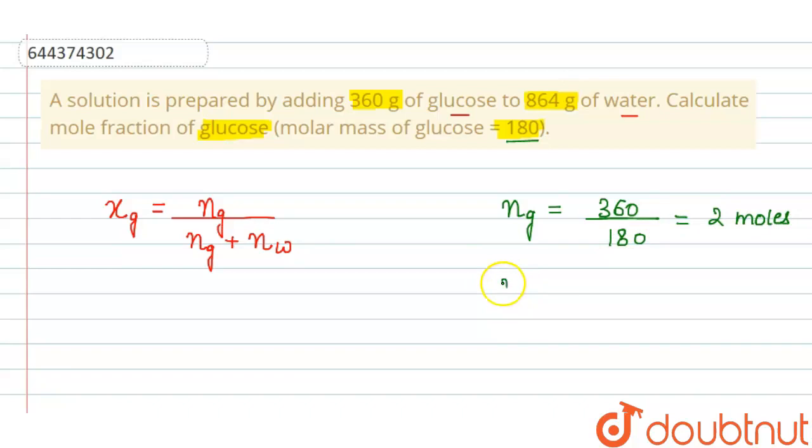Now if we calculate the number of moles of water, the mass of water which is 864 grams divided by the molar mass of water, which we know is 18 grams per mole, so it is 18.